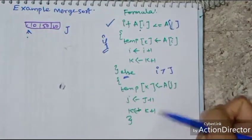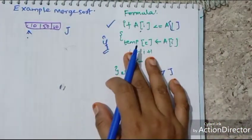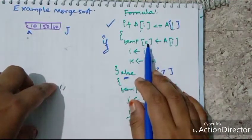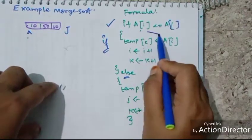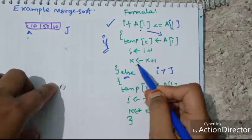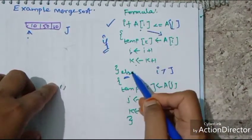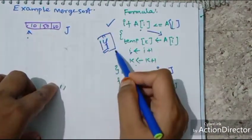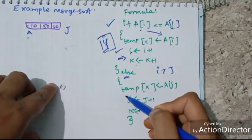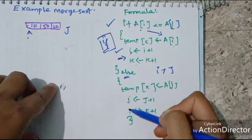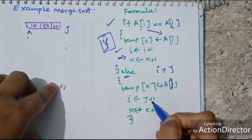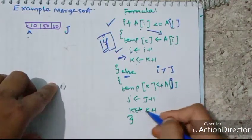We are going to check the condition using this algorithm. If the value of I is lesser than or equal to J, then K will be A of I, I equals I plus 1, and K equals K plus 1. If the else part is executed, then K equals A of J, J equals J plus 1, and K equals K plus 1.